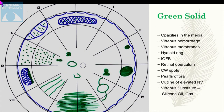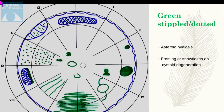Green color is used for anything in the vitreous — vitreous opacities, vitreous hemorrhage, vitreous membranes, hyaloid ring, intraocular foreign bodies, cotton wool spots, and elevated neovascularization (flat neovascularization is documented in red). Green is also used for vitreous substitutes such as silicone oil or gas. Green stippled or dotted is used for asteroid hyalosis and for peripheral retinal degenerations with a frosting or snowflake pattern.